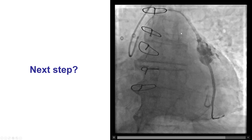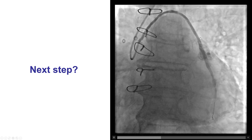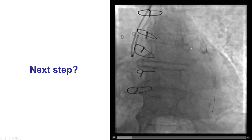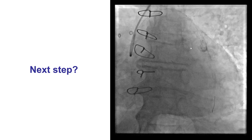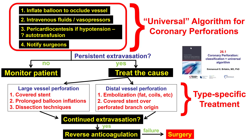The angiogram done immediately after did show a saphenous vein graft perforation. So, what to do when perforation occurs? The first step, as with every perforation, is to inflate a balloon to occlude the vessel. If the stent balloon is still there, it can be used; otherwise, another balloon can be advanced. Then fluids are given. Pericardiocentesis can be done; however, here the bleeding is not into the pericardium but into the mediastinum, so pericardiocentesis would not help.